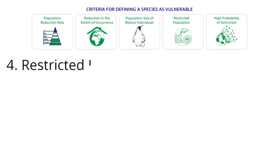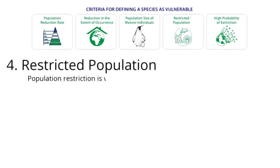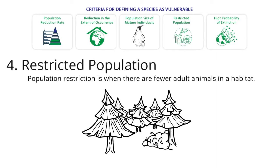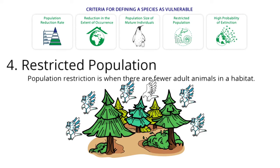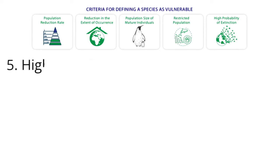4. Restricted Population. Population restriction is when there are fewer adult animals in a habitat. Loss of habitats also causes population restrictions. Vulnerable species have an area where they live that is less than 8 square miles. A species is vulnerable when there are 1,000 or fewer adult animals in a place they normally live. Species that are restricted are at risk of becoming endangered.